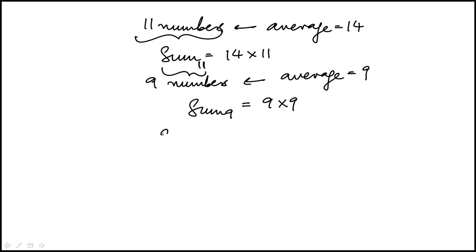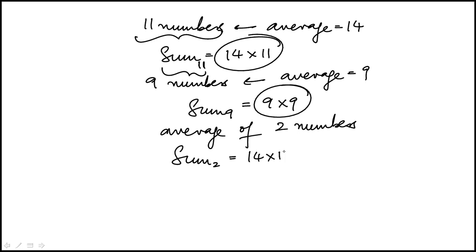And the question is asking for, what is the average of the other two numbers? So if I know that the 11 numbers add up to this and the 9 numbers add up to this, then the sum of those two remaining numbers would just be the difference of those two.